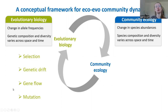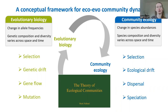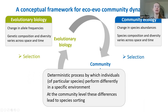We know evolution is driven by four fundamental processes: selection, genetic drift, gene flow, and mutation. Mark Fallon synthesized in his book The Theory of Ecological Communities that there are parallel processes in community ecology: selection, ecological drift, dispersal, and speciation. I want to highlight two of these. Selection is a deterministic process by which individuals perform differently in a specific environment; at the community level these differences lead to species sorting — I will use that term to distinguish from selection at the population level.